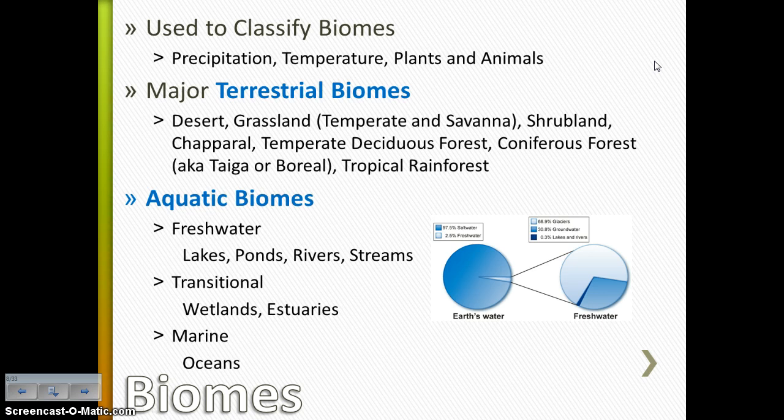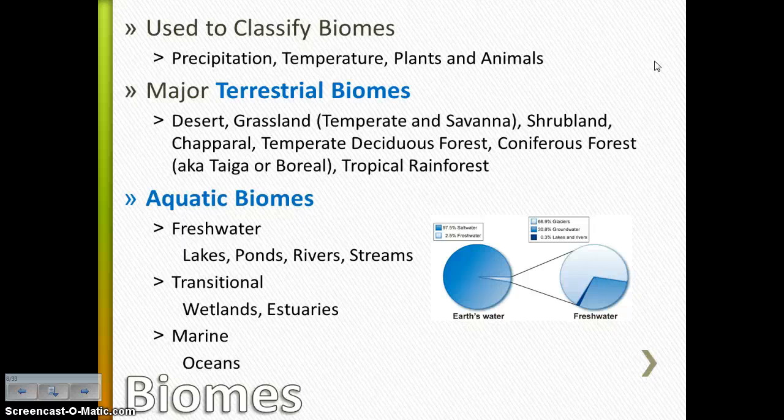I am not going to spend a lot of time talking about the different biomes. If you need extra help with that, I am posting some PowerPoints to the blog. But you do need to know what is used to classify a biome — what makes a biome a biome. It's having similar of these four categories: precipitation, temperature, plants, and animals. Sometimes you'll hear it as three major categories because precipitation and temperature make up the climate, so sometimes you'll hear climate, plants, and animals.